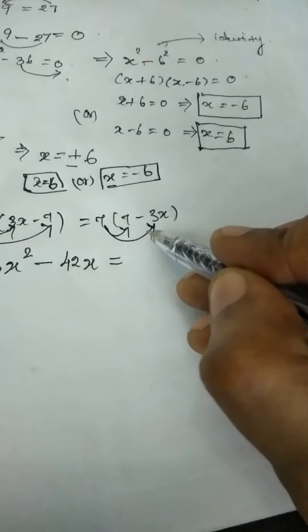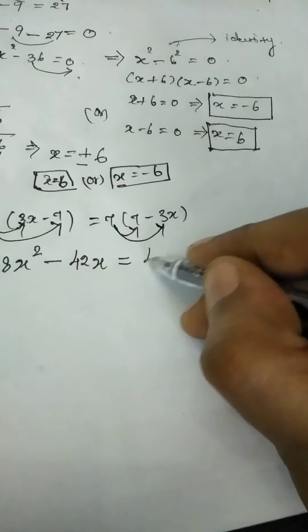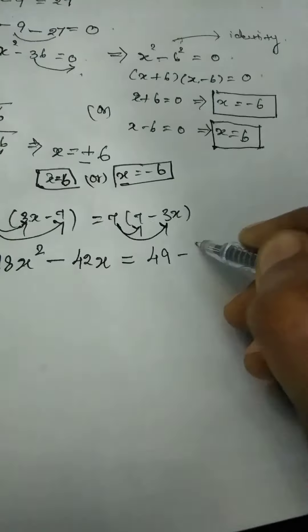So plus into minus minus, 6 7s are 42 and x also we have so 42x and similarly multiply this side, 7 7s are 49 minus 7 3s are 21 into x.